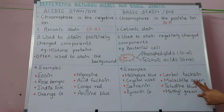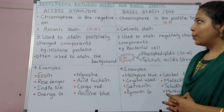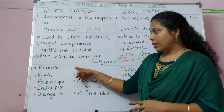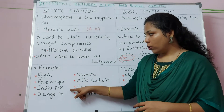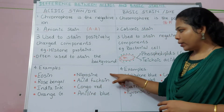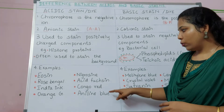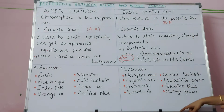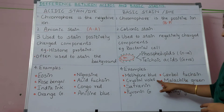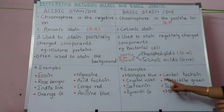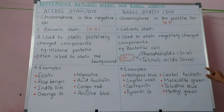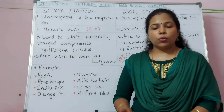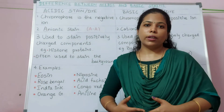Examples of acidic stain are eosin, rose bengal, india ink, orange G, nigrosin, acid fuchsin, congo red, and aniline blue. Examples of basic stain are methylene blue, crystal violet, safranin, pyronin G, carbol fuchsin, malachite green, toluidine blue, and methyl green. Thank you so much for listening to the entire video.